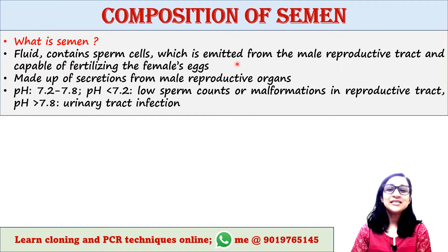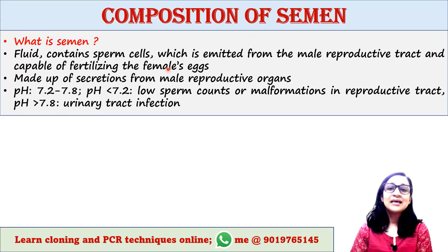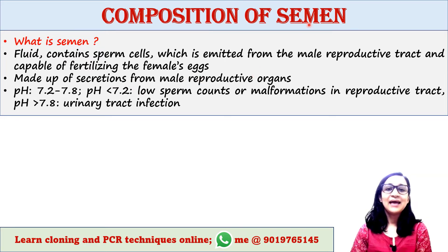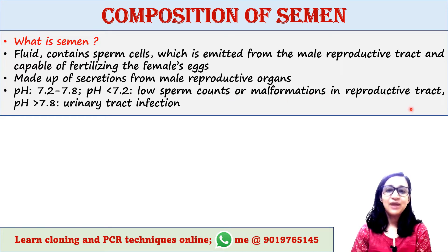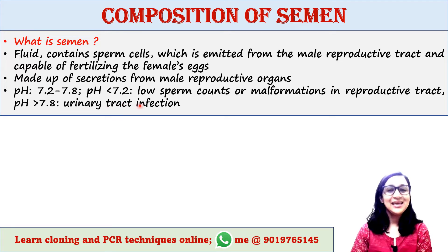Semen is emitted from the male reproductive tract and is capable of fertilizing the female's eggs. The fluid of semen is made up of secretions from male reproductive organs. The pH range of semen is 7.2 to 7.8. A pH lower than 7.2 indicates low sperm counts or malformations in the reproductive tract, whereas a pH higher than 7.8 indicates urinary tract infection.